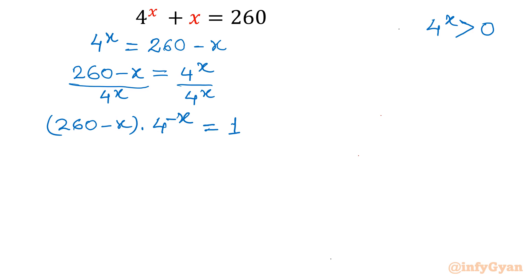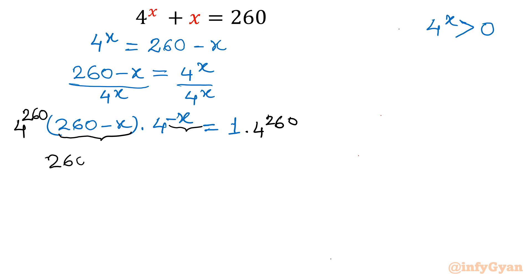Now I can see that in the coefficient we have 260 minus x, and in the power we have only minus x. So what I am trying to do is put 260 into the power as well. How? By multiplying both sides by 4 to the power 260. So the LHS will become (260 minus x) times 4 to the power (260 minus x), equal to 4 to the power 260.